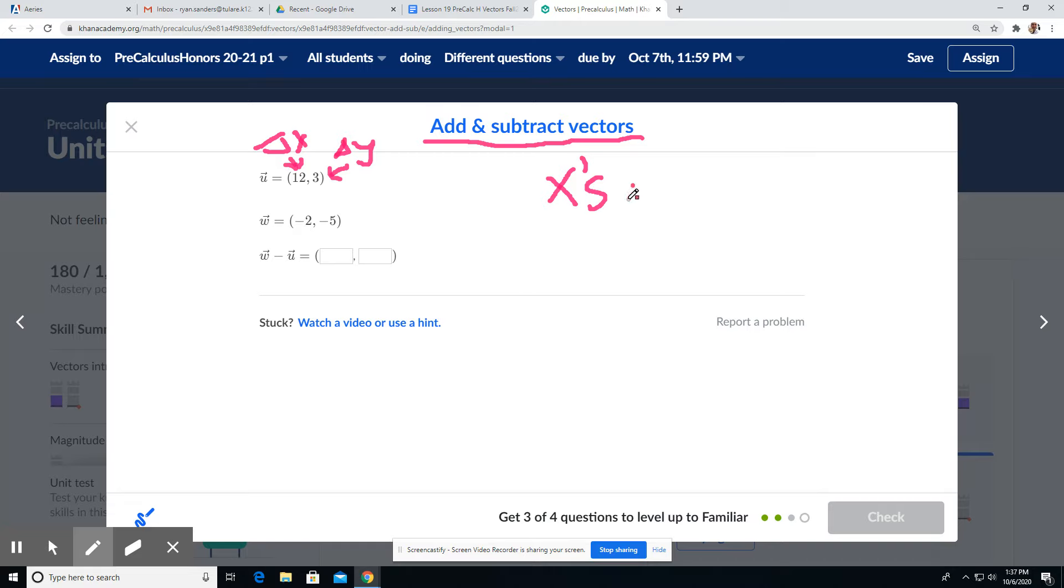W for the X's is negative 2, and then minus whatever the change in X is for U. In this case, it's 12. Okay? So that's all we do here for the change in X's. Negative 2 minus 12 is negative 14.